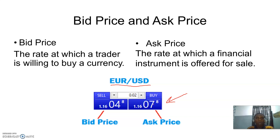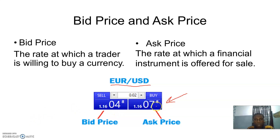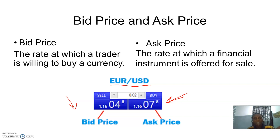For the bid price, when you are selling, you are selling at the rate at which a trader is willing to buy that currency. So imagine you bought this currency at the ask price and you sell it at the bid price. The bid price is the rate at which a trader is willing to buy a currency, and the ask price is the rate at which a financial instrument is being offered for sale. Let me know in the comment section if you have any questions.